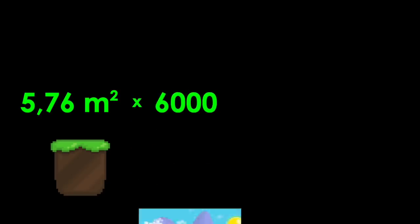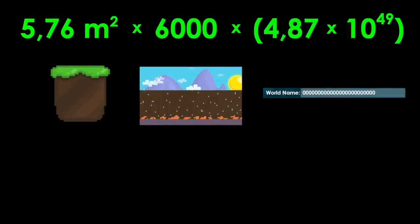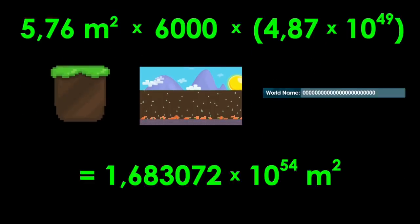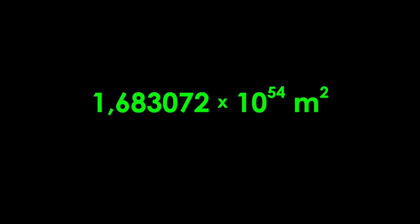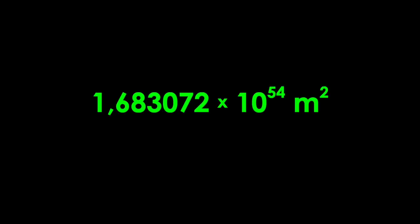Now we just multiply the surface area of a dirt by the number of blocks in one world, and then by the number of possible worlds. And we get a product of this: 1.6 septendecillion. That is absolutely enormous.